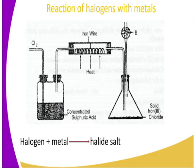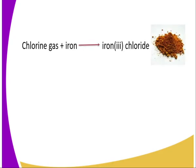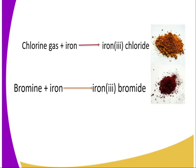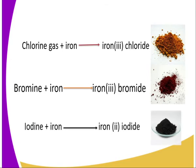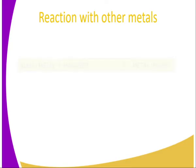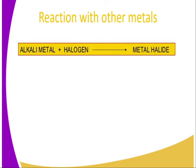In general, a halogen plus a metal gives us a metal halide salt. In this case, chlorine plus iron gives us iron(III) chloride — note that iron has two valences, Fe²⁺ and Fe³⁺, but here the stable ion formed is the higher oxidation state, iron(III). Chlorine gas plus iron gives iron(III) chloride, which is brown in color. Similarly, bromine reacts with iron to give iron(III) bromide, and iodine gives iron(II) iodide.